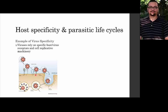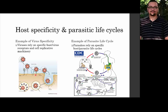Parasites are a little different — they have more complex life cycles and are a bit more promiscuous than viruses, a little less host specific. For instance, with Cryptosporidium, an oocyst is ingested by a human, the human gets colonized in the intestine and secretes more oocysts which contaminate water or food, which are then ingested again in another cycle. You could substitute a cow in that life cycle and it wouldn't make a difference for Cryptosporidium.